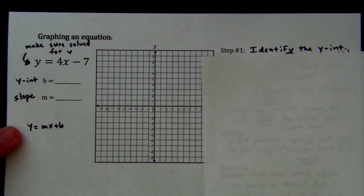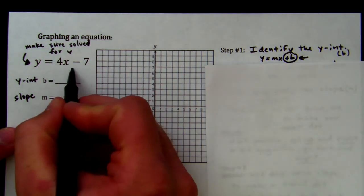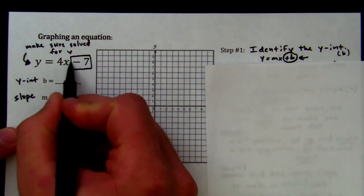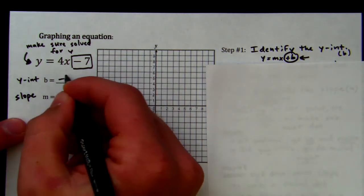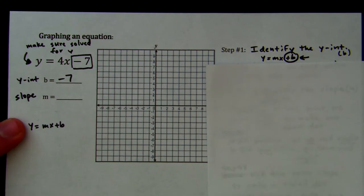So step one here, we are going to identify the y-intercept, and that is our letter b. So right here, this is our b. We take the number at the end and we carry the sign out front. So my b is negative 7, b is negative 7.